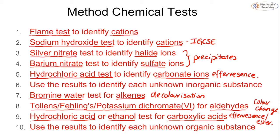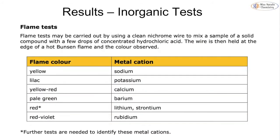For flame tests we need to know our colours. Key ones include potassium as lilac, lithium and strontium as red — since both give red, further tests are needed — and calcium as yellow-red. To carry out the flame test, use a clean nichrome wire, mix the solid compound with concentrated hydrochloric acid, hold it in the hot blue flame, and observe the colour.